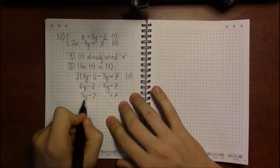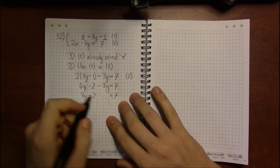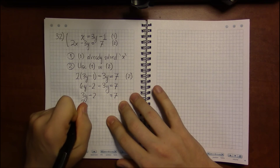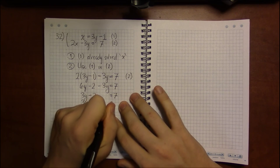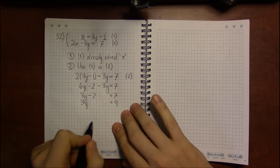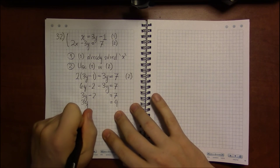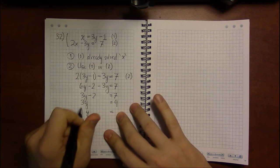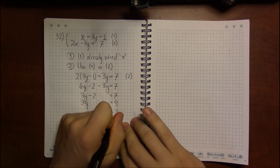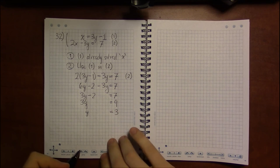We can't combine the 3y and minus 2, but we can move the minus 2 to the other side by adding 2 to both sides and getting 9. And so we're left with the conclusion that y equals 3.